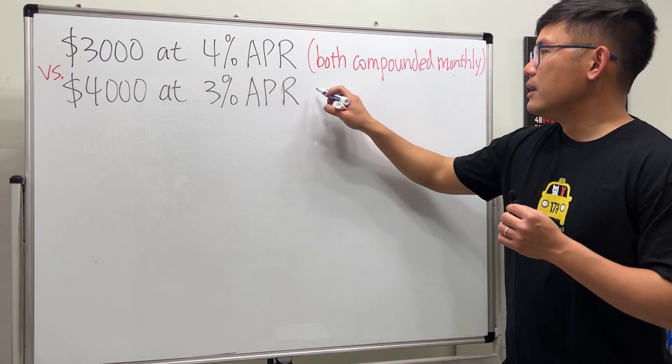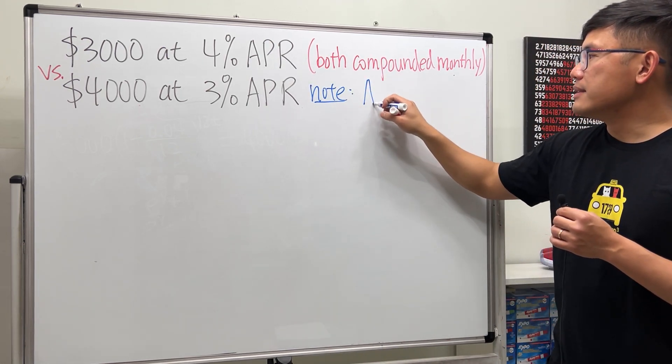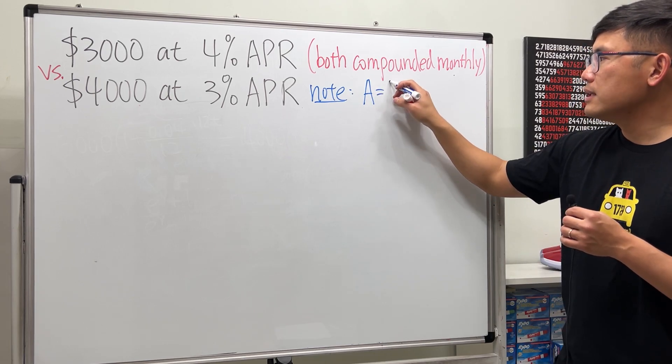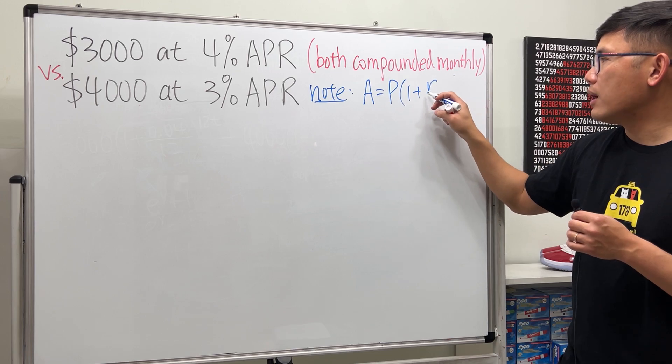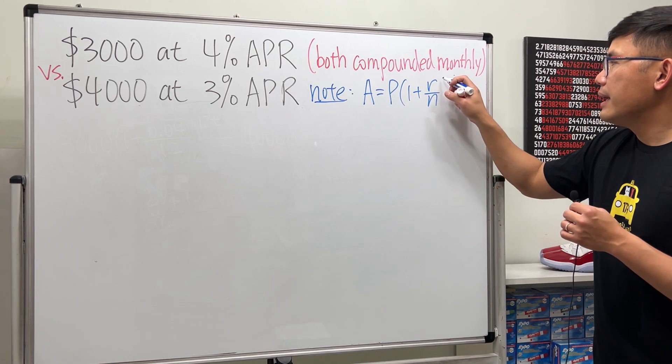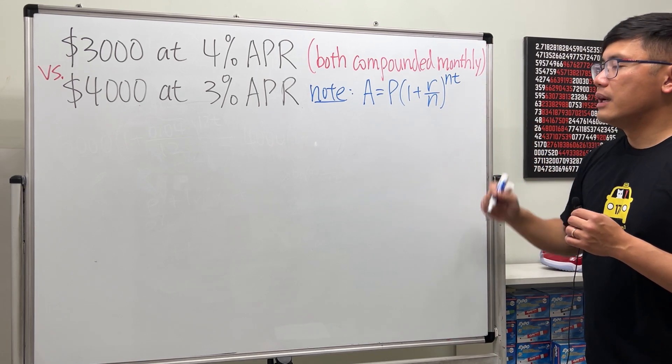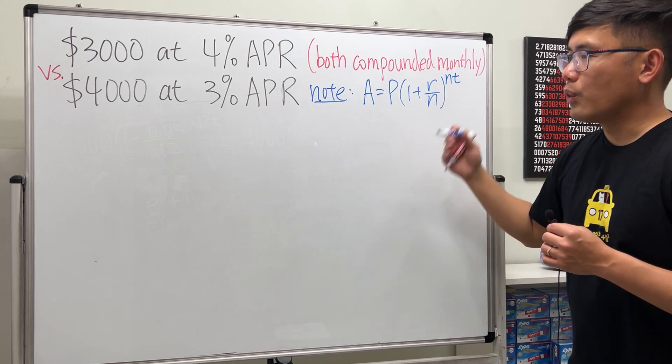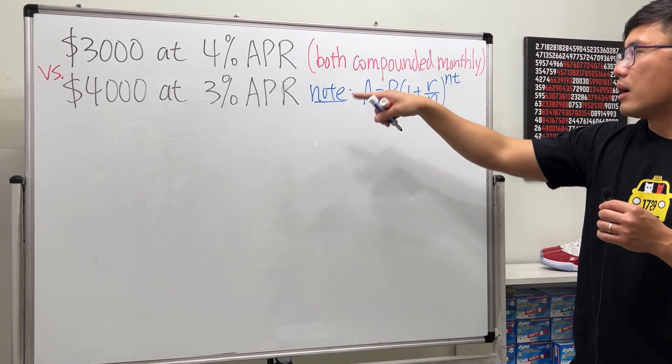Let's find the time - how long it will take for both things to give you the same amount of money. We will have to use the compound interest formula: A = P(1 + r/n)^(nt). The amount you get equals the principal times one plus the interest rate divided by how many times we compound in a year, raised to n times t, which is how many years you want to put in the account.